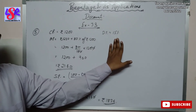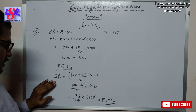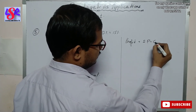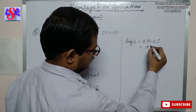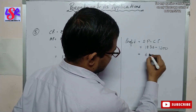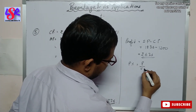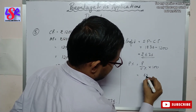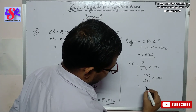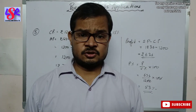The shopkeeper bought the article for rupees 1200 and sold it for rupees 1836. Since SP > CP, there is a profit. Profit = SP − CP = 1836 − 1200 = rupees 636. Profit% = (Profit / CP) × 100 = (636 / 1200) × 100 = 53%. So the shopkeeper makes a profit of 53% even after giving a discount of 15%. That's all for this video, thank you.